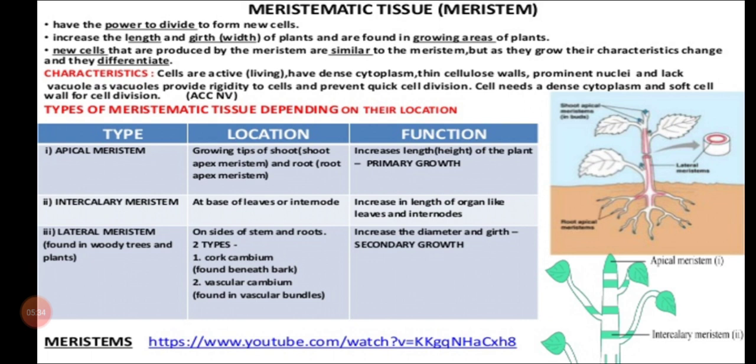Cells will form through meristematic tissue via what kind of cell division — whether it is mitosis or meiosis? Meristematic cells will undergo mitosis only, not meiosis, because meiosis we can only see in sex cells. Mitosis means you get the same kinds of cells, and once they become matured, they will not undergo further division and become permanent. That is all about the three important characteristics of meristematic tissues.